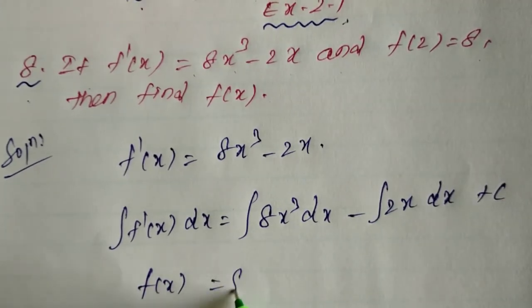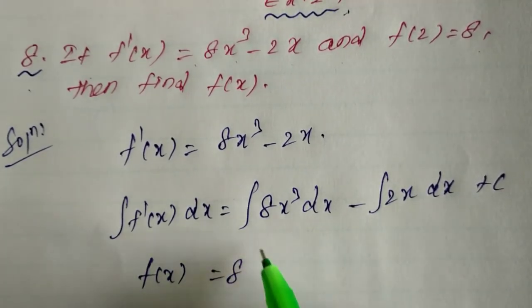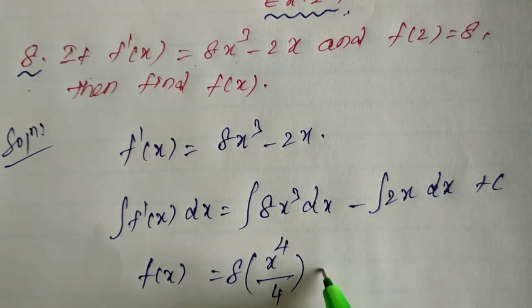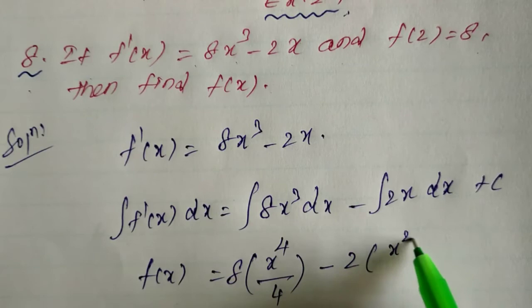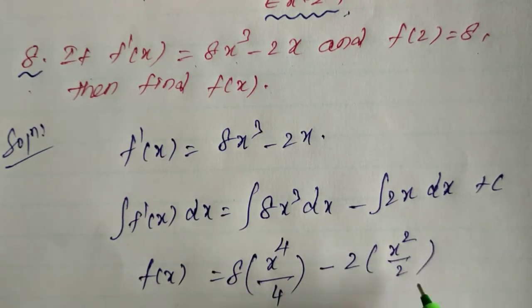The constant 8 stays, then x³ plus 1 gives us x⁴, divided by 4, so 8x⁴/4. For the second term, constant 2 stays, giving us 2x²/2.